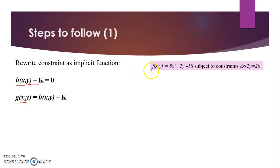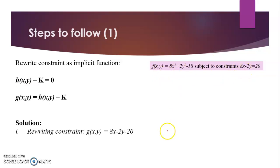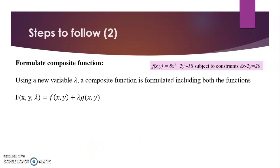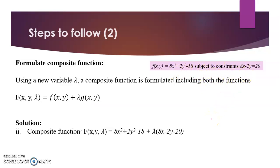In this question, we rewrite the constraint as the implicit function: g(x,y) = 8x − 2y − 20 = 0. Step 2 is to formulate the composite (Lagrangian) function, which is the objective function plus lambda times g(x,y). So for our problem it becomes: F = 8x² + 2y² − 18 + λ(8x − 2y − 20). This is our composite function.